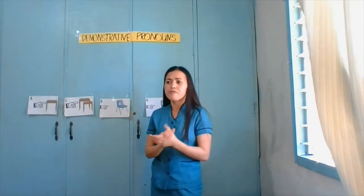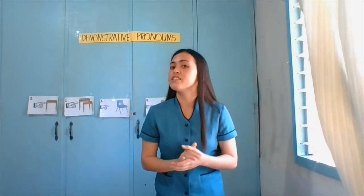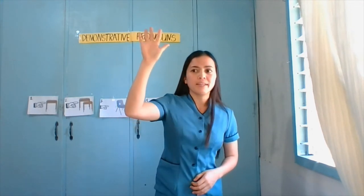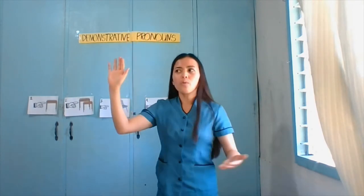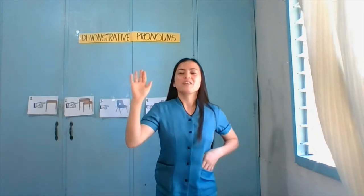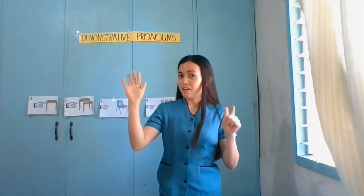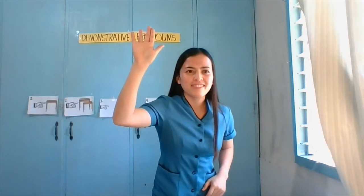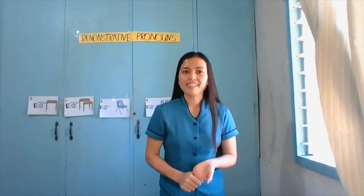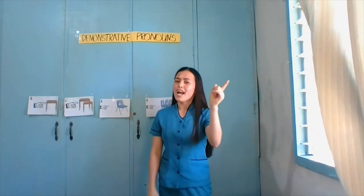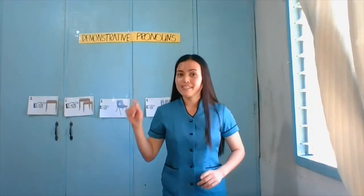How can you give me a definition of demonstrative pronouns? Does anybody know the answer? Kelly — they show where an object is. Joshua — used to identify things, events, or persons in relation to the distance or time. Let's check if all your answers are correct through this next activity. Are you ready? This activity is entitled 'What is this?'